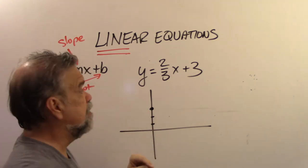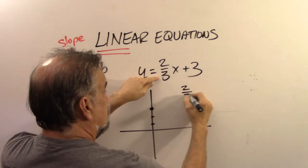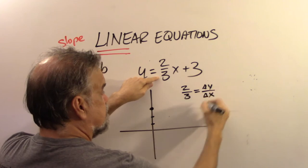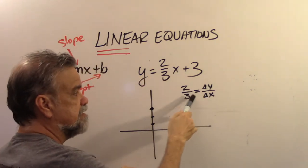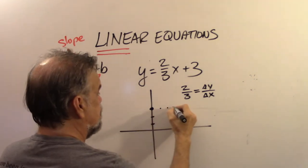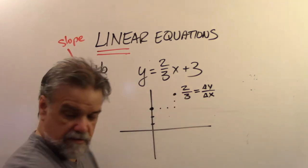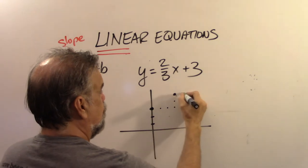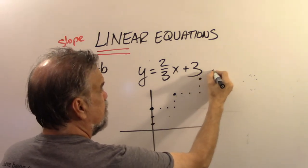Now use your slope. Your slope is 2 over 3 — that's the change in y over the change in x. So as y changes by 2, x is going to change by 3. Go 1, 2, 3 to the right and 1, 2 up — it's going to go through that point.